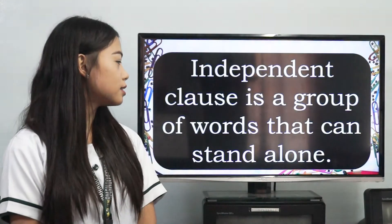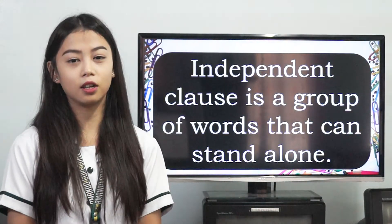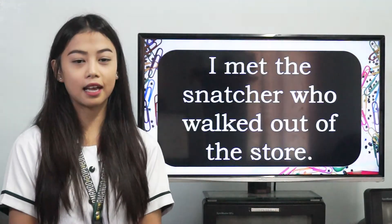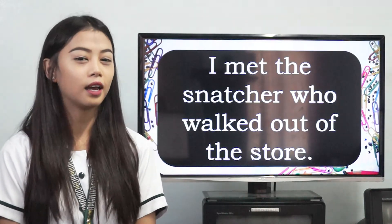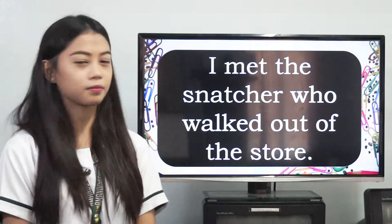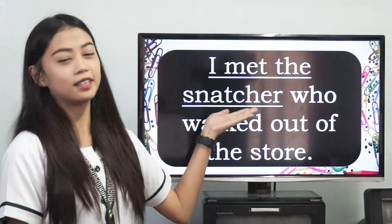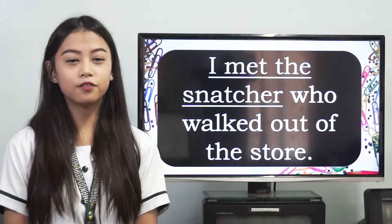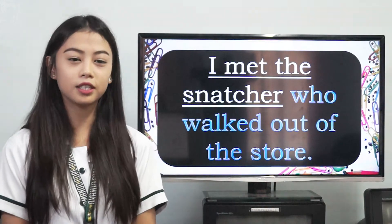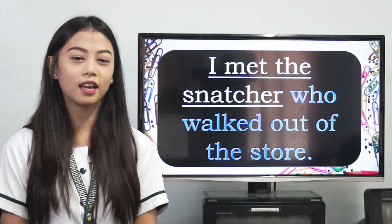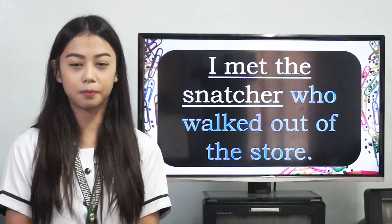An adjective clause has to be part of an independent clause. An independent clause is a group of words that can stand alone. For example: I met the snatcher who walked out of the store. The independent clause is I met the snatcher. The adjective clause is who walked out of the store, which defines or describes the snatcher — the noun the subject met.